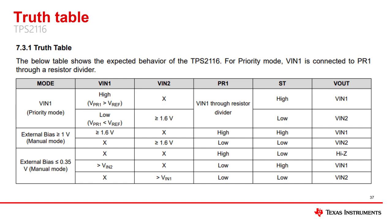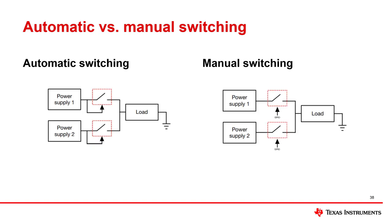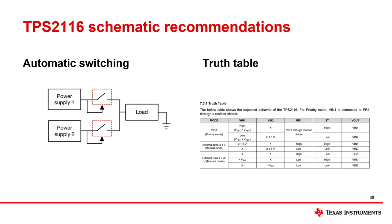As the first step to creating your schematic, always refer to the truth table for the power mux you've selected. For example, here is the truth table for the TPS2116. Once you have reviewed the truth table, it is important to decide whether you would like to perform an automatic or manual switching technique. Automatic switching references the input voltages to keep the device autonomous, whereas manual switching controls the power path with an external GPIO control.